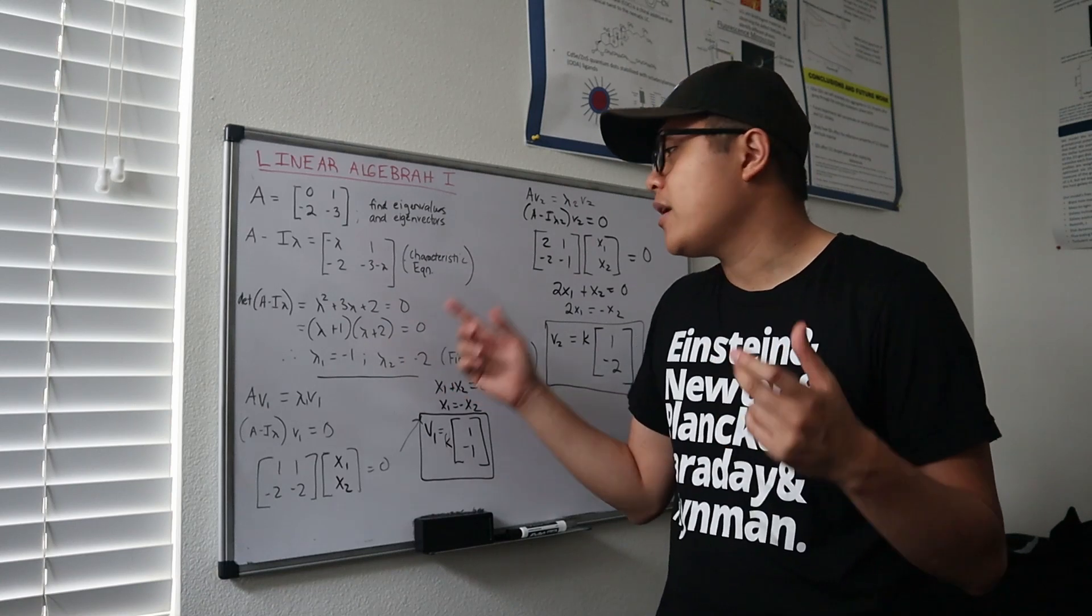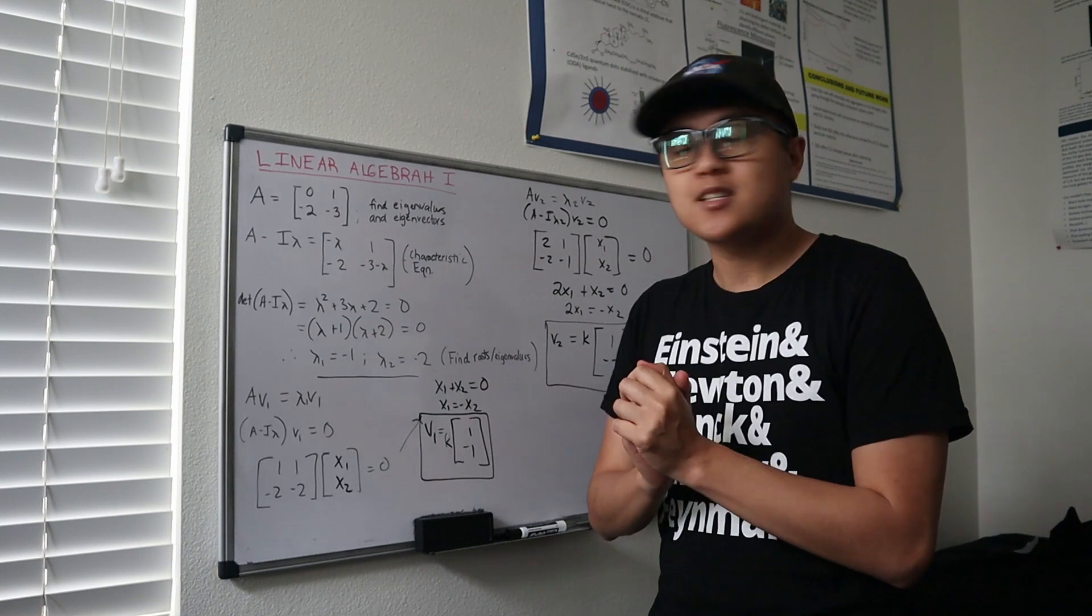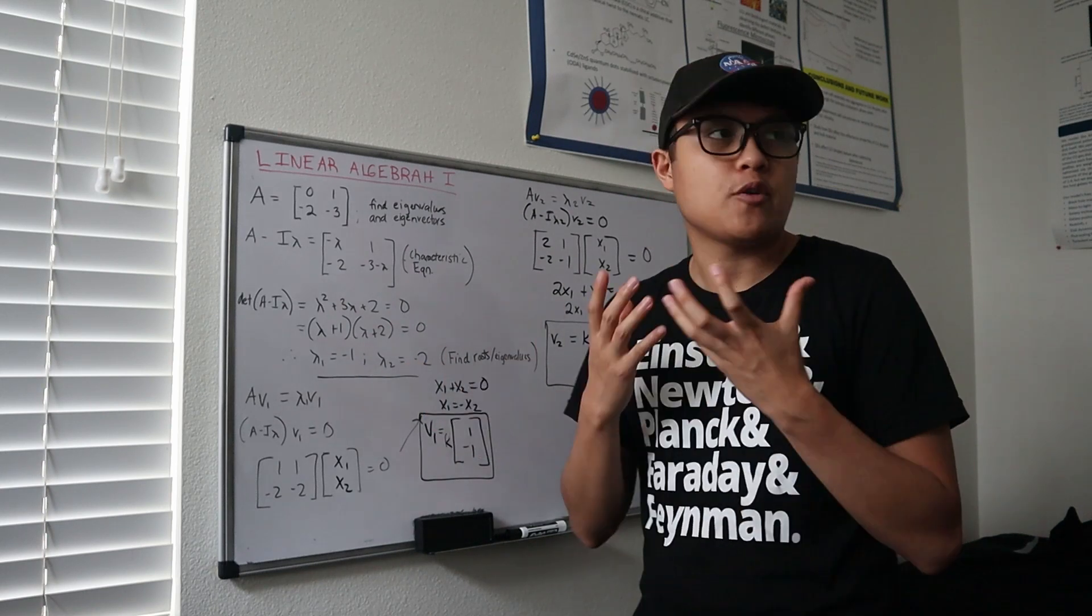We set that equal to zero, and since we have a 2x2 matrix, we're going to have a quadratic equation, which we can solve for and find two roots, which are the eigenvalues.